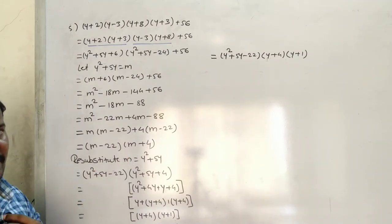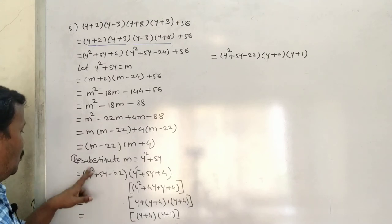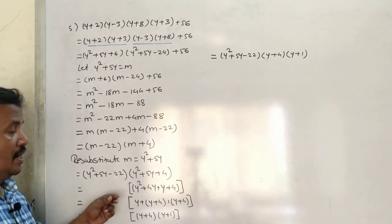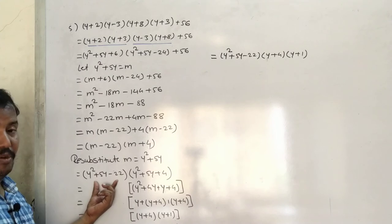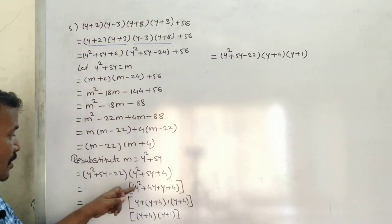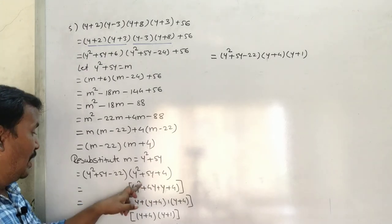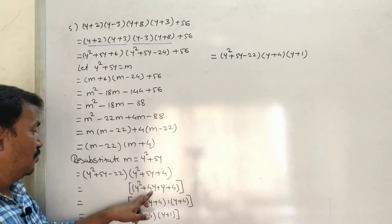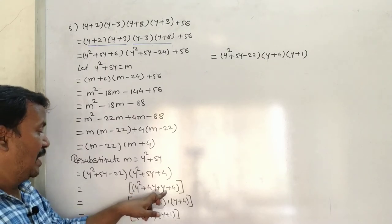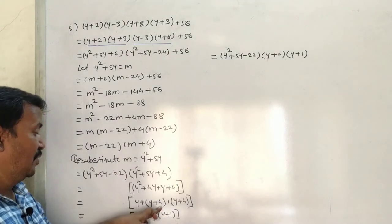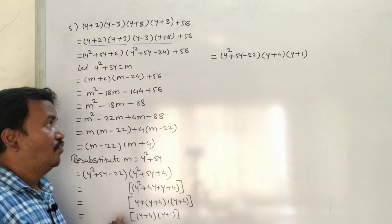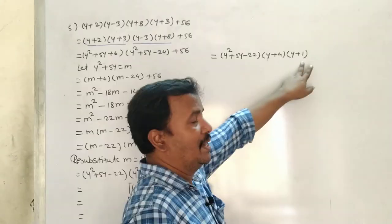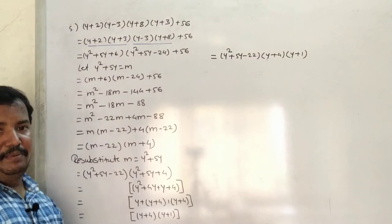Re-substituting m = y² + 5y: factors are (y² + 5y - 22) and (y² + 5y + 4). For y² + 5y + 4: multiply to 4 and add to 5, so 4 and 1. That gives y² + 4y + y + 4 = y(y + 4) + 1(y + 4) = (y + 4)(y + 1). So the final factors are (y² + 5y - 22)(y + 4)(y + 1).